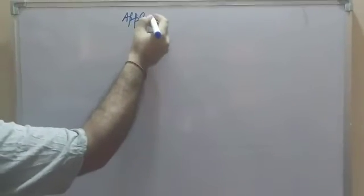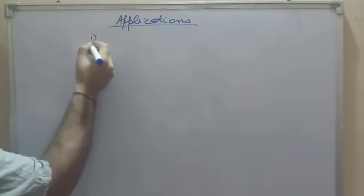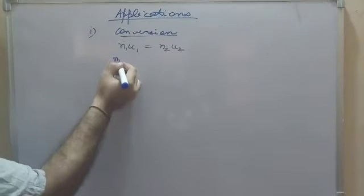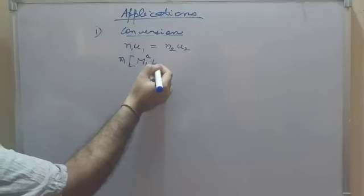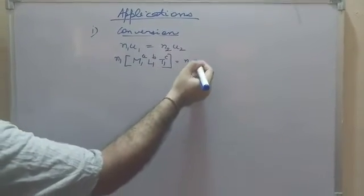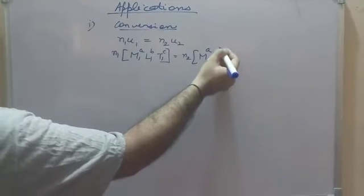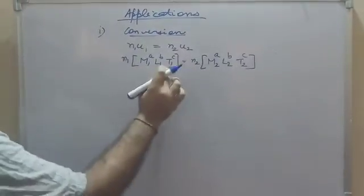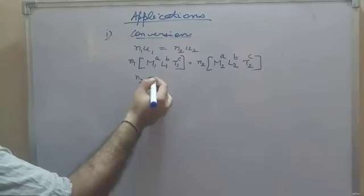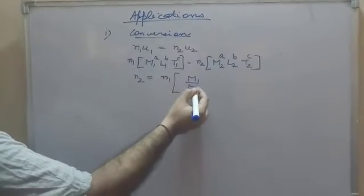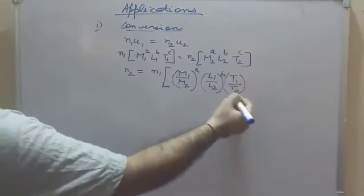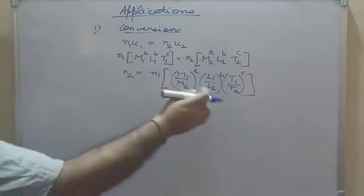The first application of dimensions is conversion from one system to another. Starting from n1·u1 = n2·u2, we write u1 as M1^a · L1^b · T1^c and u2 as M2^a · L2^b · T2^c. This gives us n2 = n1 × (M1/M2)^a × (L1/L2)^b × (T1/T2)^c, which is the standard formula for conversion using dimensions.